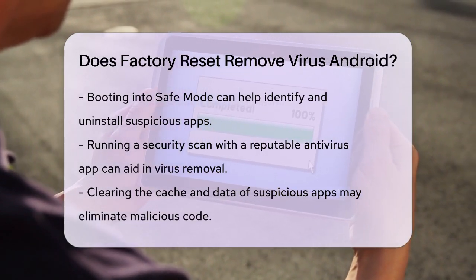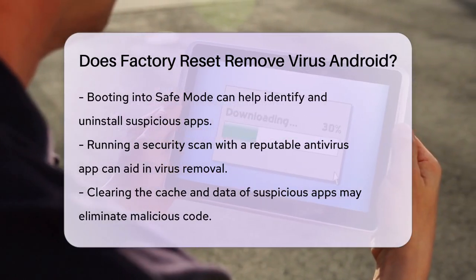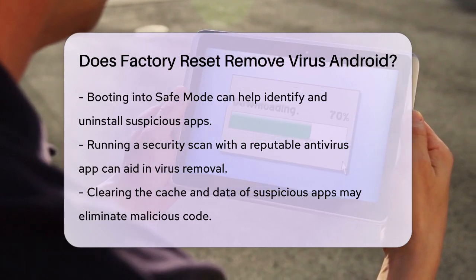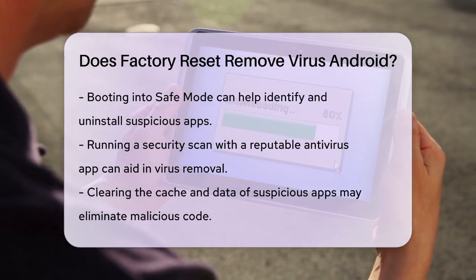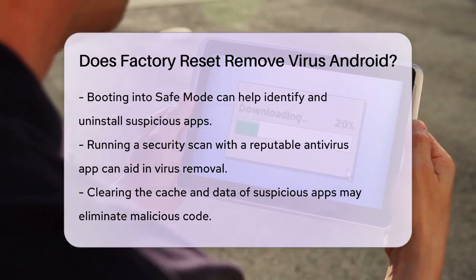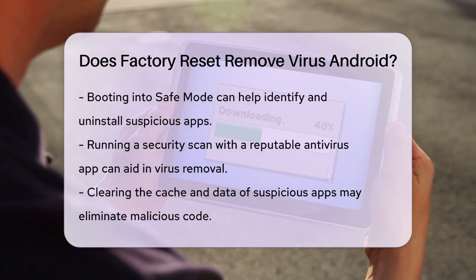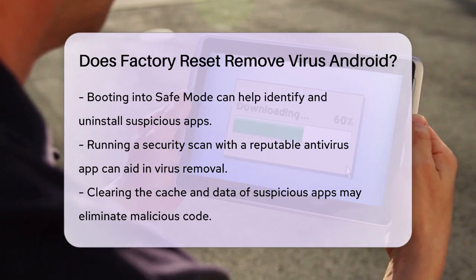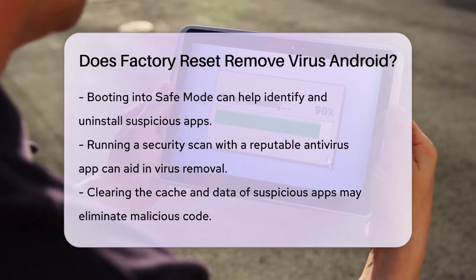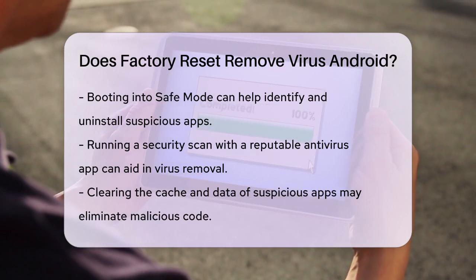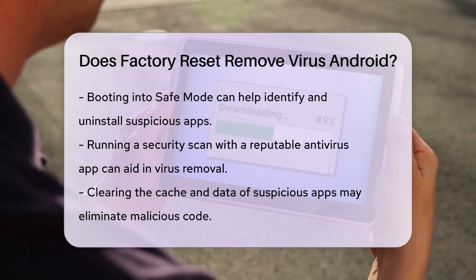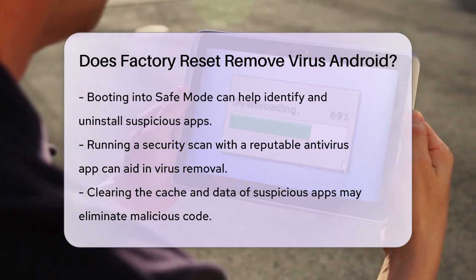Before you decide on a factory reset, there are other steps you can take to try and remove the virus. You can boot your phone into safe mode, which temporarily disables third-party apps, making it easier to identify and uninstall any suspicious apps. You can also run a security scan using a built-in security app or a reputable antivirus app from the Google Play Store.